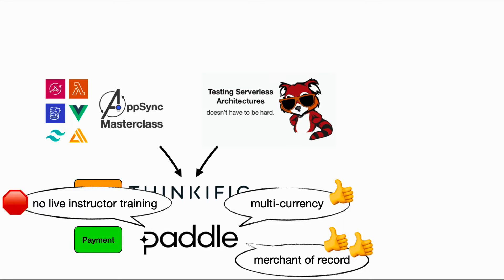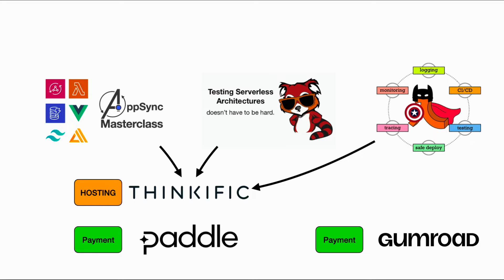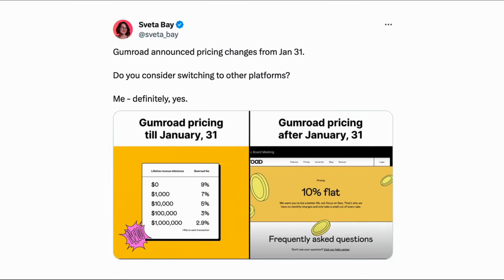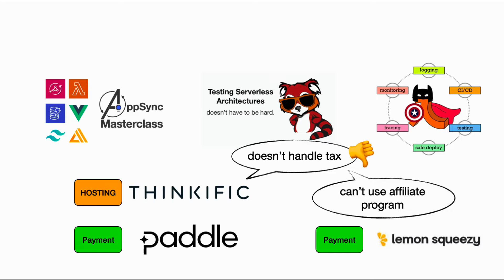Paddle doesn't allow live instructor training on their platform because the tax rules for those are very different from digital products, which means I can't use them for my Production-Ready Serverless workshop even though I can still host the video content on Thinkific. Initially I went with Gumroad — I was happy with them — but then they announced a big price hike where the new pricing also passes the payment processing cost to you, so my Gumroad cost went from 5% to about 13% in total. At that point I decided to switch and ended up with Lemon Squeezy, which is reasonably priced and handles tax collection and reporting.